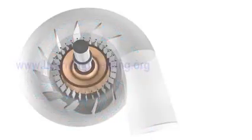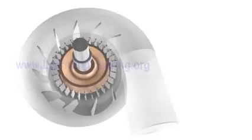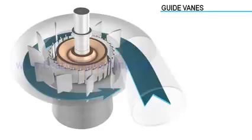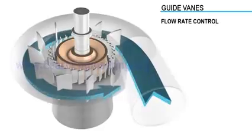Demand for power may vary over time. The guide vanes mechanism is used to control water flow rate and makes sure that power production is synchronized with power demand.